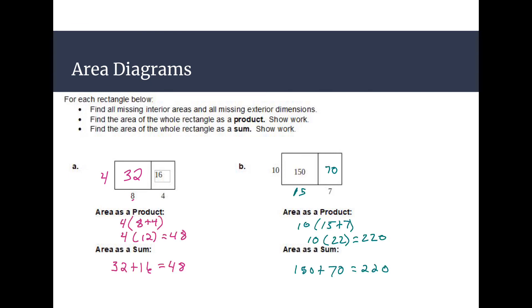All right, so we have our two answers here, take a look at them. For area we get 48 for the part A and we get 220 for part B. Make sure you look to make sure you got those answers the correct way. It's important to know the difference between the areas of product and the areas of sum.